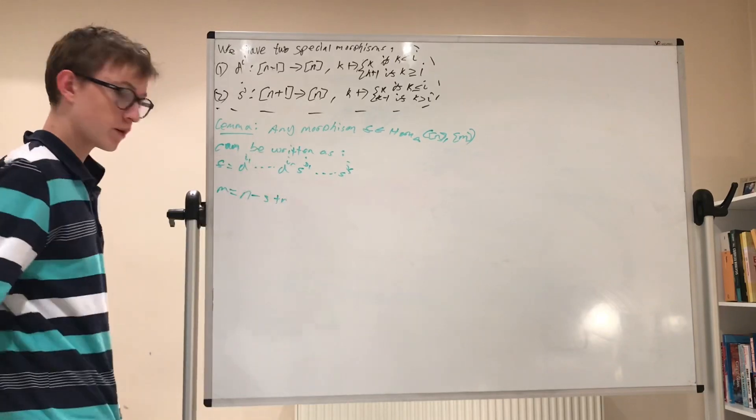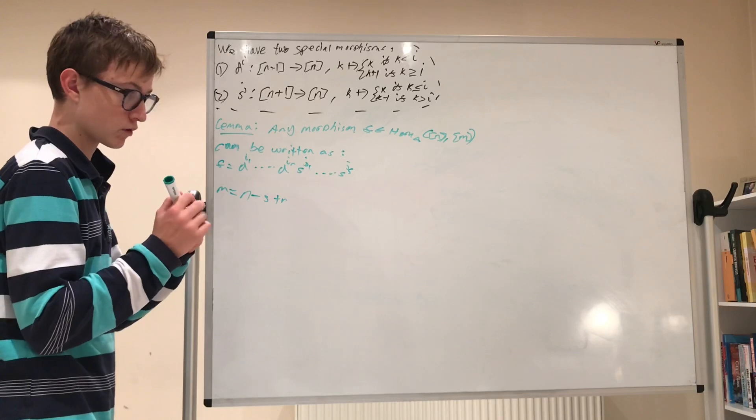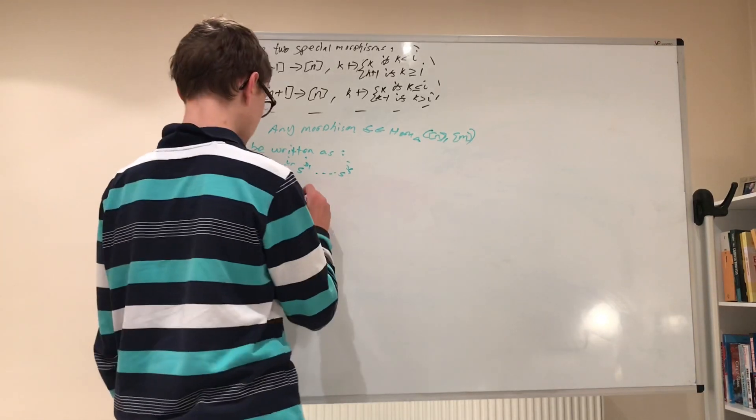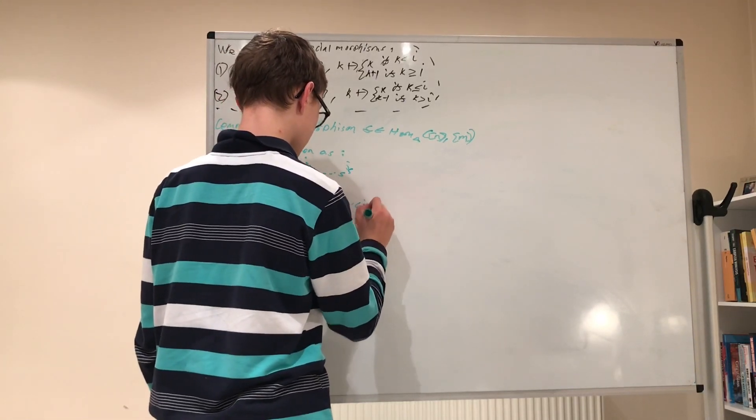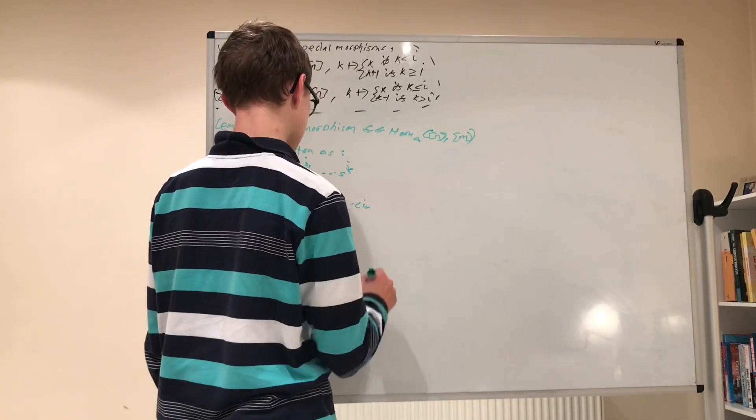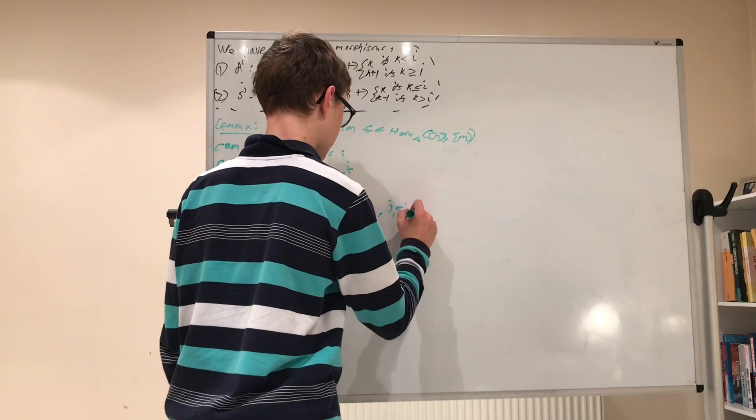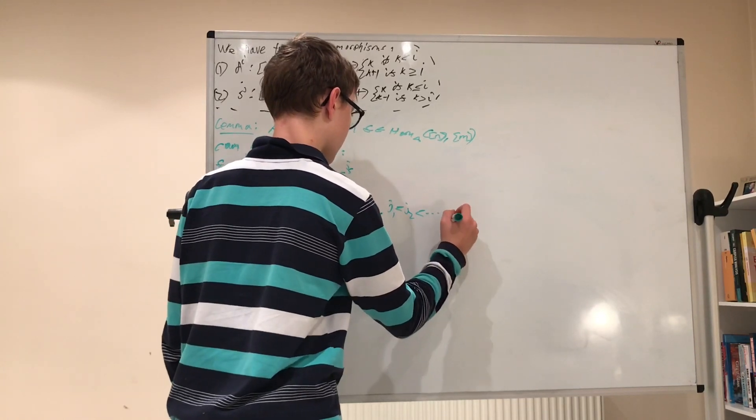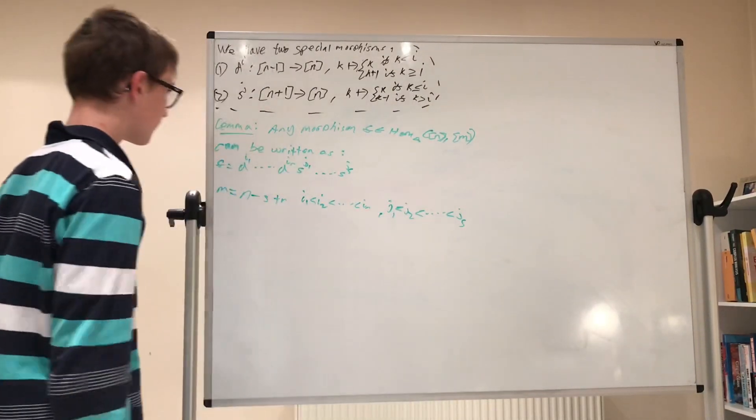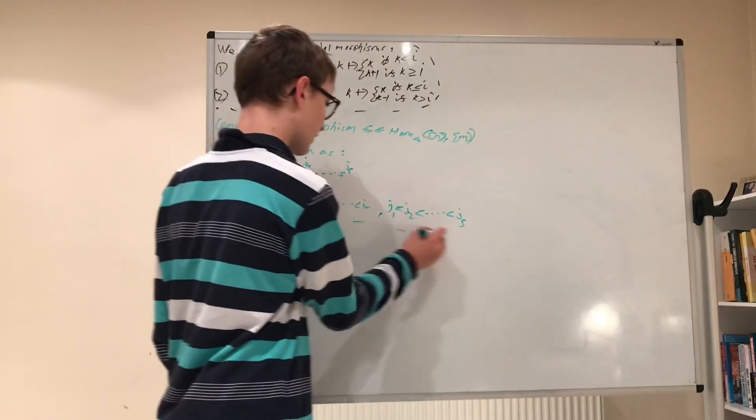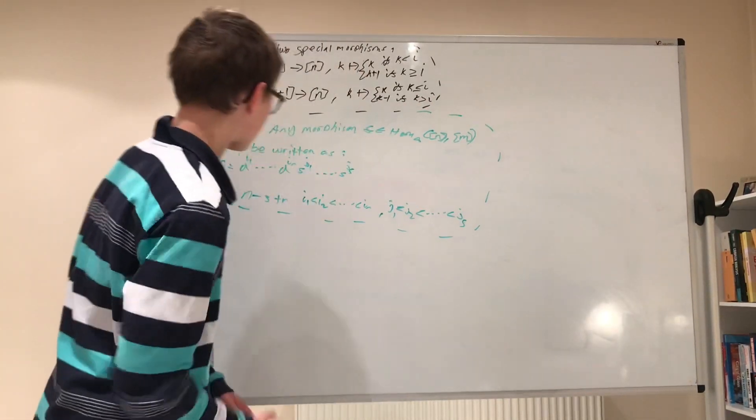And these i1s must be in ascending order. So, that is, i1 is less than i2 is less than up until ir. And, similarly, j1 must be less than j2, must be less than up until js. I just said that you have an idea just to wrap your head around what's actually happening here. I'll give an example.